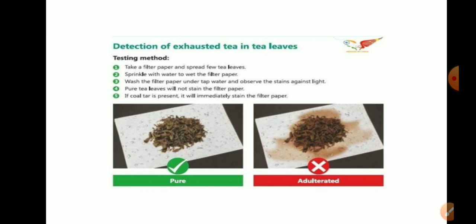To test tea leaves, take a filter paper and spread the tea leaves on it. Add the coloring powder and observe on the filter paper. Pure tea leaves will show one result, while impure tea leaves will spread color onto the filter paper.